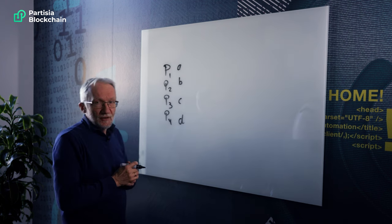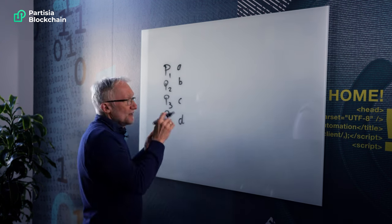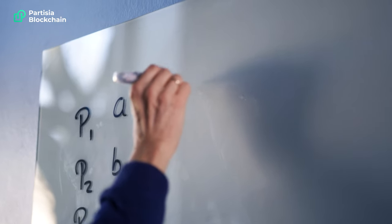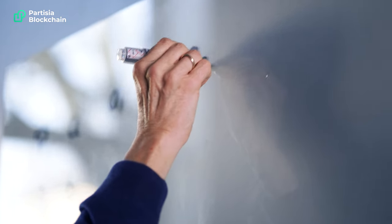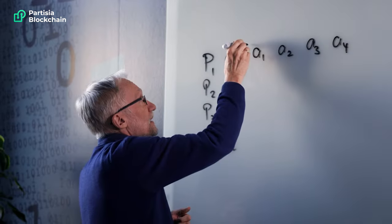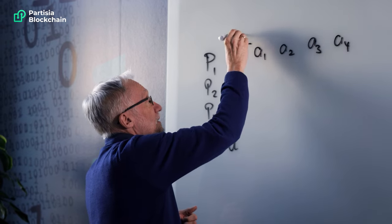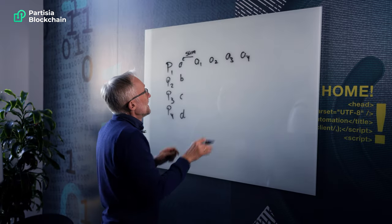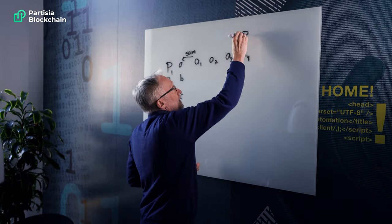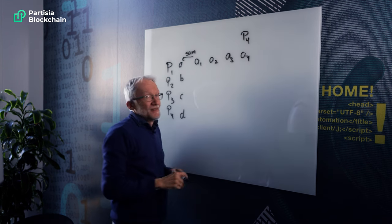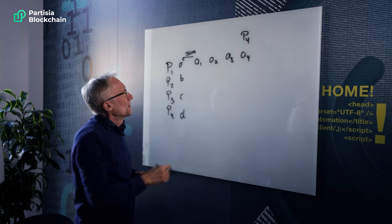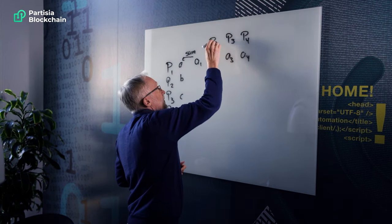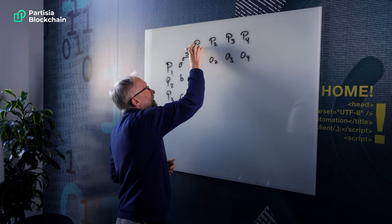And then what the first guy does, for instance, is he's going to select four random numbers. So let's call them A1 up to A4. And these are randomly chosen except for this condition that they have to sum together to the salary of the first guy. And then what you do is you give the fourth number here privately to this guy, the fourth guy in this game here. And you give the third number to the third guy and the second number to the second guy. And you keep the last number to yourself.